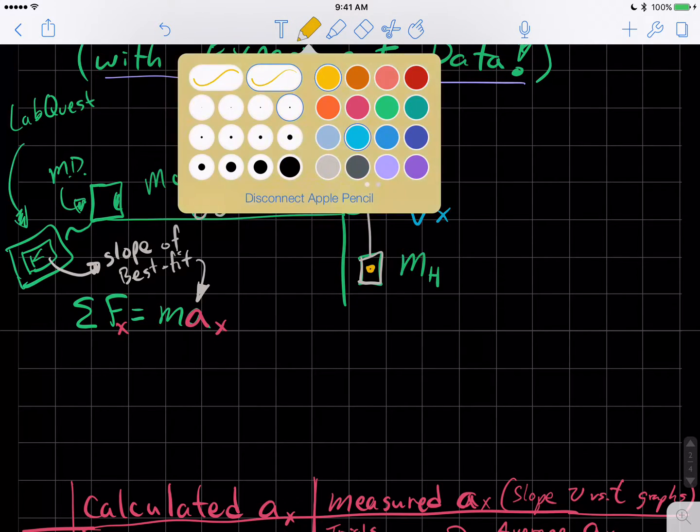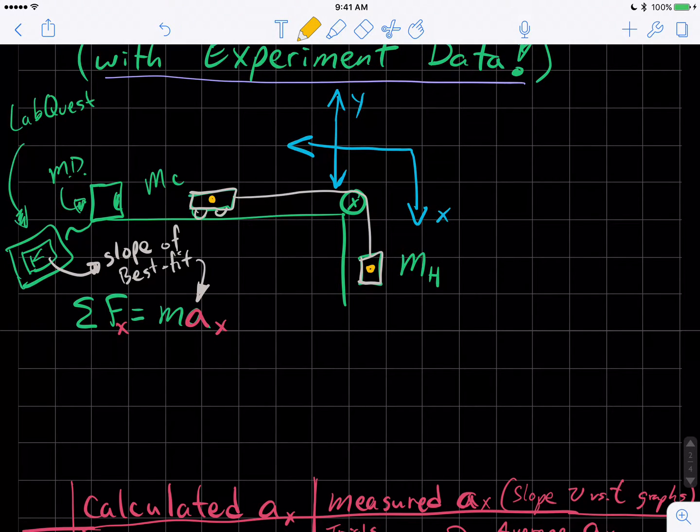We identify all the external forces on the system. We look at MC and MH as a system. We identify these forces. We have the weight of MH, so we'll call it FGH, the hanging mass's weight. And then we have the weight of the MC, FGC. And the weight of the MC is not accelerating the system. It's just being counteracted by the normal force, FN, from the table holding MC up.